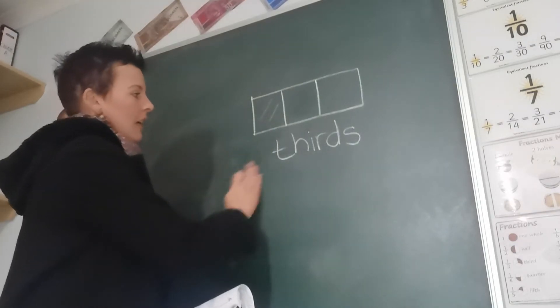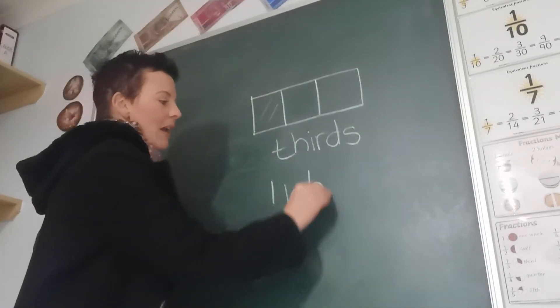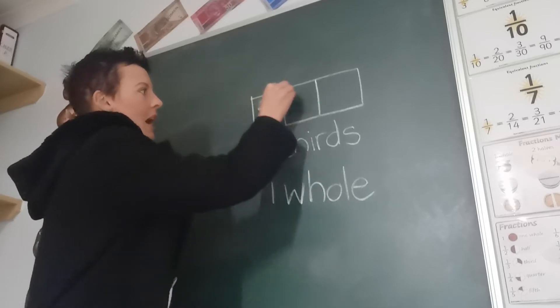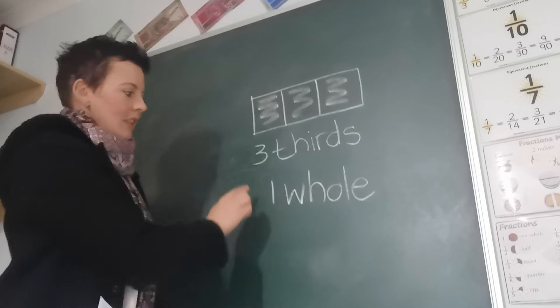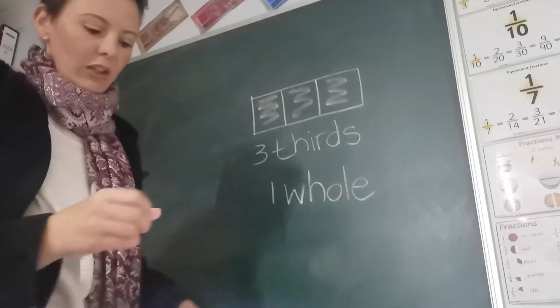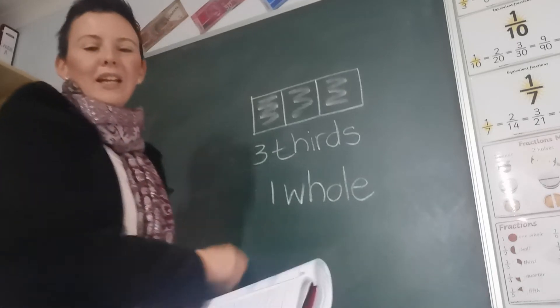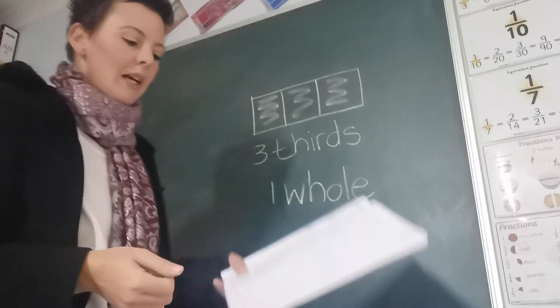Okay, if they say color in 1 whole, it means you color in the whole shape: 1, 2, 3. So 3 thirds is equal to 1 whole. So whether they say color in 3 thirds or if they say color in 1 whole, it means the same thing. That means you color in all 3 pieces.